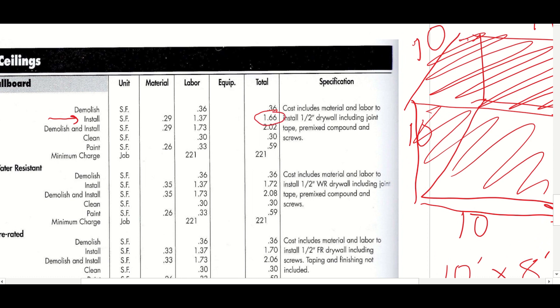Back to our room, we have 420 square feet of drywall we need to apply. So we go up here to our install charge. And we're going to take our total for install and we're going to multiply that by 420 to get the total installation.